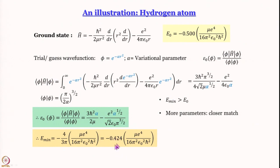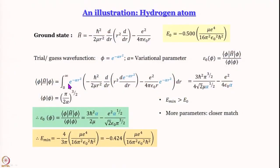We got 0.424 and the exact value is 0.500. How can I get closer to 0.500? The answer is by introducing another parameter. I have taken a Gaussian with exponent 2; instead I can write q and play around with q. If q goes closer to 1, the match should be better because I know what the 1s wave function is. So the energy should be closer to the exact solution. By putting in more parameters I get a closer match.